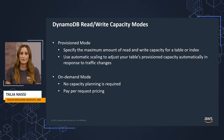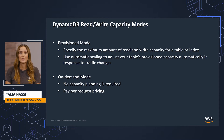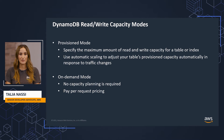With on-demand mode, DynamoDB accommodates workloads as they ramp up or down. If a workload's traffic level reaches a new peak, DynamoDB adapts rapidly to accommodate the workload. On-demand mode is a good option if you create new tables with unknown workloads or you have unpredictable application traffic. Additionally, it can be a good option if you prefer paying for only what you use.